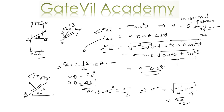The maximum resultant stress occurs at theta equal to 0, so the maximum resultant stress is on plane AB itself. Using these expressions you can find the resultant stress, normal stress, and shear stress on any plane at an angle theta to plane AB.